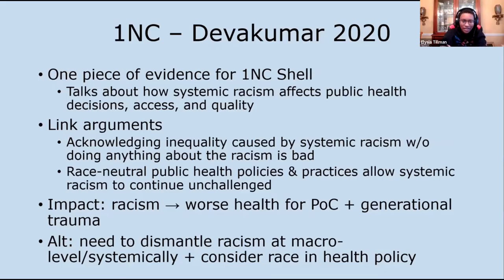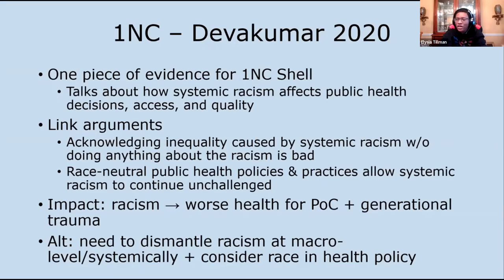The second link argument is that when governments or scientists are making public health decisions — like whether or not to do the plan — and they don't think about race, offering a generic blanket solution that works for everybody, that allows systemic racism to continue unchallenged. Unless decision-makers are specifically thinking about how systemic racism affects who will have access, who's going to get sick, and all that, then we'll still see the same problems where inequality persists and we never challenge what's causing it in the first place.